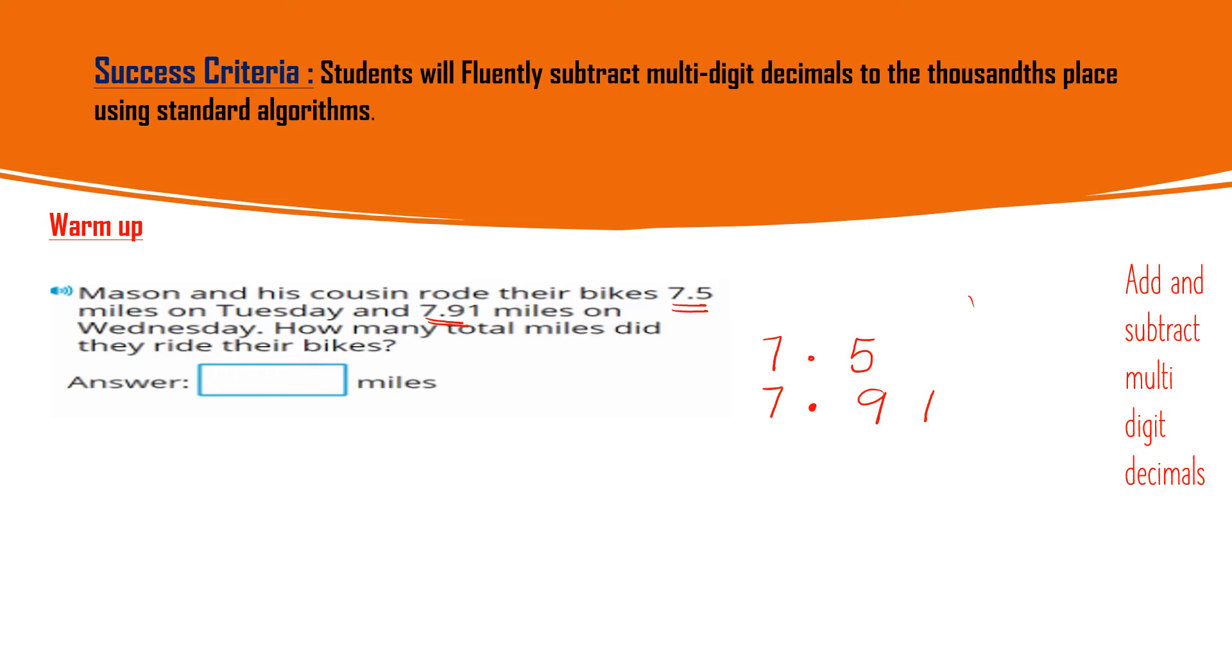How many total? Now I told you that whenever there is total it means plus. So what do you want to find? How many total miles they ride their bikes. The places which are empty, just put the zero. Now add: zero plus one is one, five plus nine is fourteen - four and carry one. Point is point and the carry seven plus seven is fourteen, fourteen plus one is fifteen. So the answer is they have ridden 15.41 miles.